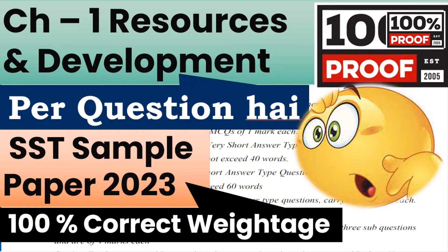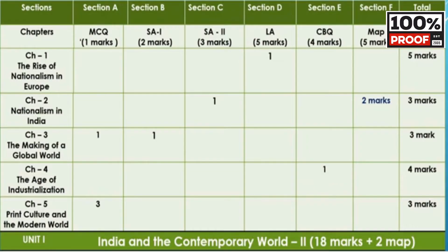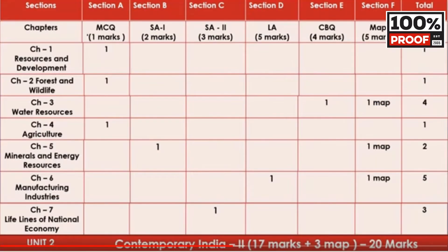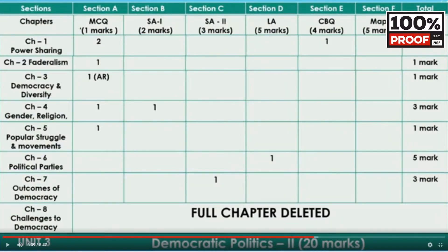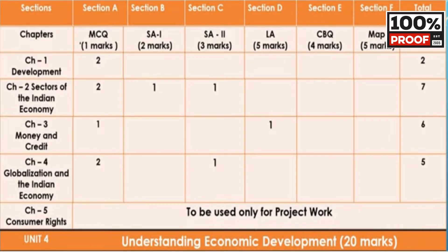So here I will show you that I have already prepared every subject's blueprint. When I checked it again, when CBSE gave the syllabus, every unit of SST was 20 marks. There were 4 units: History, Geography, Economics and Politics — each 20 marks. So I prepared this sample paper according to this blueprint.